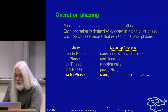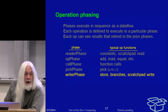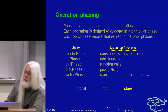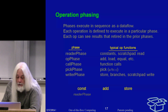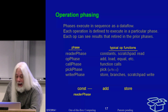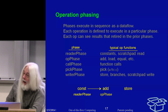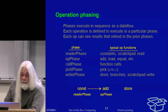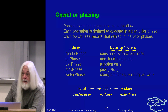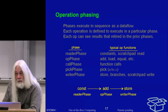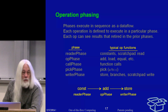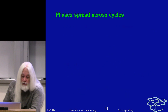So const, add, and store from our example: const is in reader phase and can pass data to add, which is in op phase. The add can pass data from op phase to writer phase. If the phases happen to be the same, you can't pass through, but you can pass to a subsequent phase in the phase order.